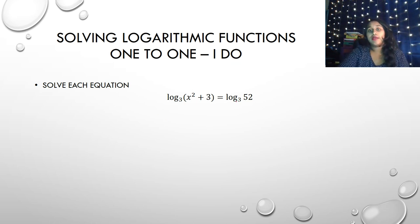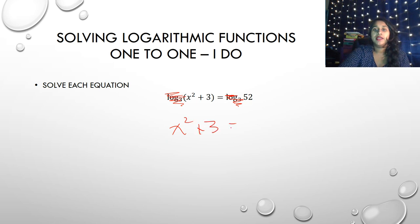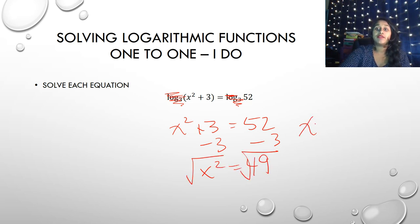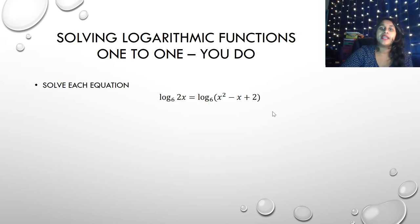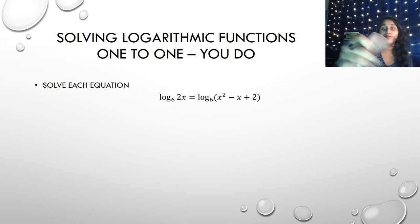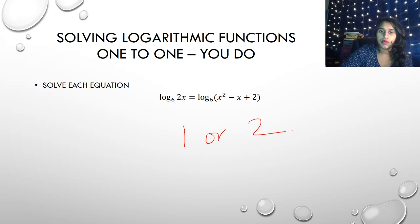Now here's another example. I see I have a log base on both sides and they're both the same — I don't have to do anything else, so I can cross those out. That becomes x² + 3 = 52. Subtracting 3 gives x² = 49. Taking the square root, x = ±7. I test both of those to make sure they are both valid solutions. The answer for the 'you do' should have been 1 or 2.